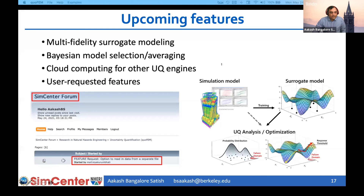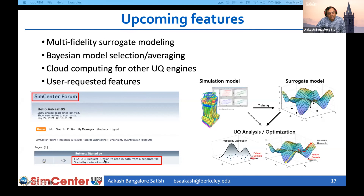To conclude, here are some upcoming features currently under development. We plan to introduce multifidelity surrogate modeling and Bayesian model selection or averaging. For the UCSD UQ engine, cloud computing is not yet available — we will make that accessible for both the SimCenter UQ engine and the UCSD UQ engine. Any other user-requested features we would be happy to hear. Please go to the SimCenter forum — as an example, the feature of reading calibration data from a separate file was actually a feature request made there, so we do listen and respond to your requests.